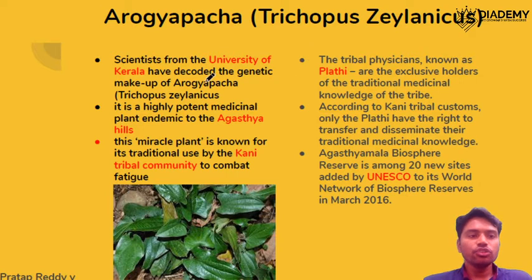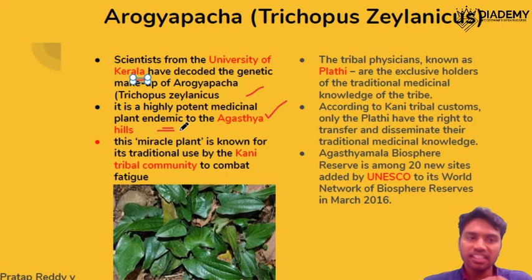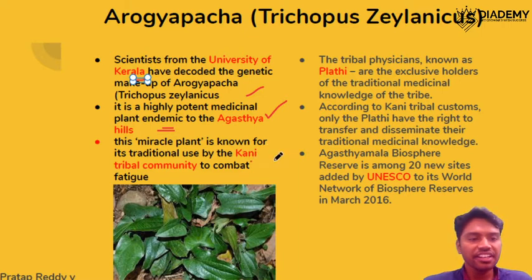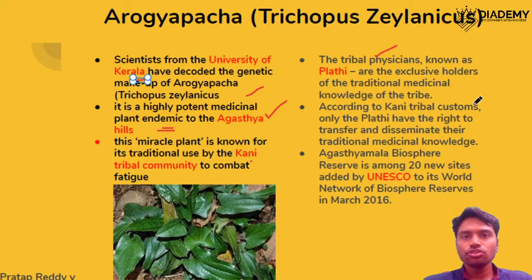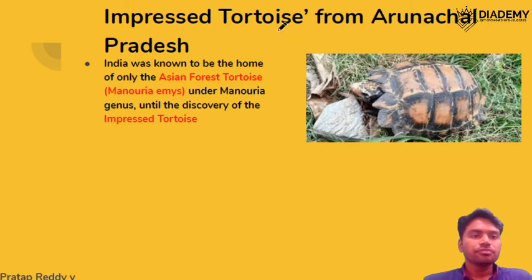Ayuragya pakka: scientists at the University of Kerala have recently decoded its genetic makeup because of its significant medicinal values. This plant is endemic to the Agasthya Hills. It is traditionally used by the Kani tribal community, who have tribal physicians called 'Plati' with exclusive rights to pass on their traditional knowledge within the community. Note that the Agasthya Mala Biosphere Reserve is one of the 20 new sites added by UNESCO in 2016.